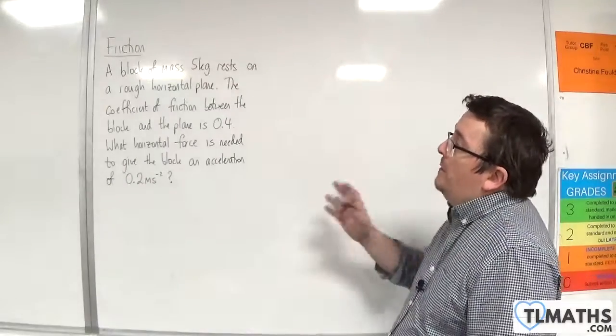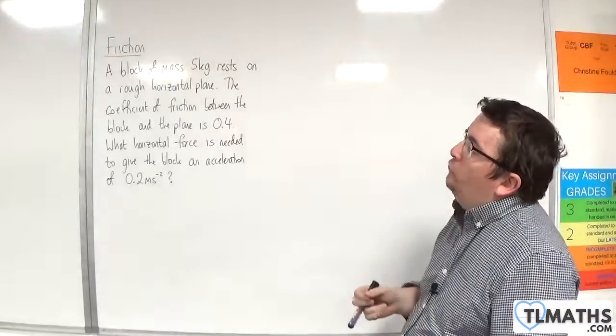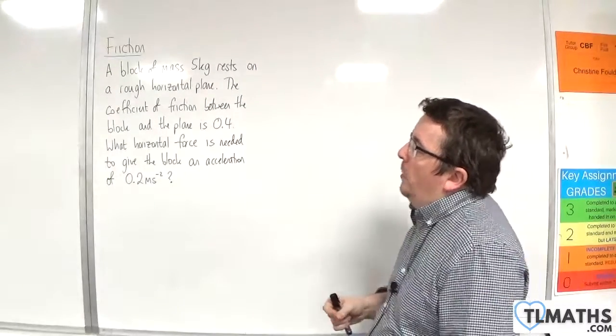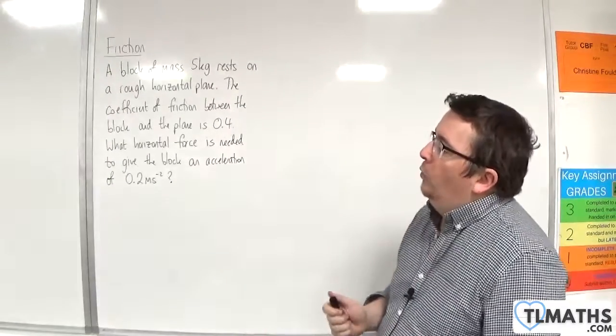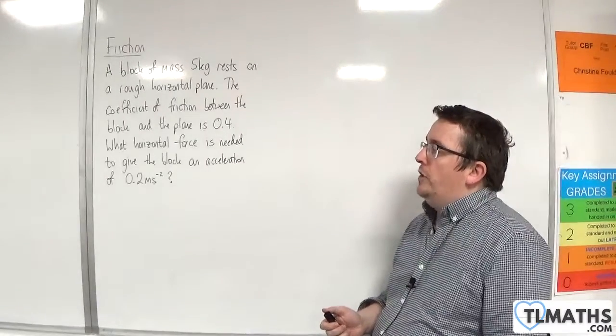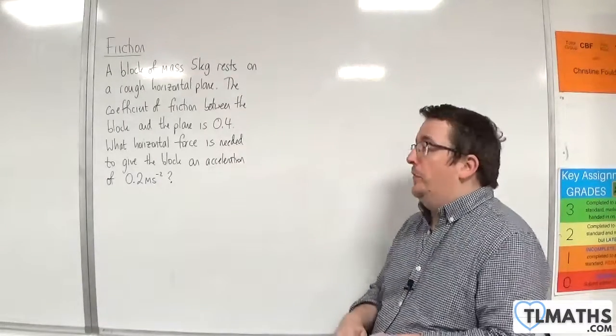In this problem, we have a block of mass 5 kilos resting on a rough horizontal plane. The coefficient of friction between the block and the plane is 0.4. What horizontal force is needed to give the block an acceleration of 0.2 meters per second squared?